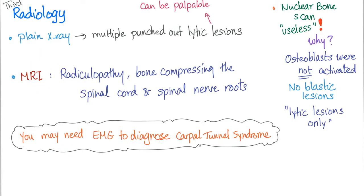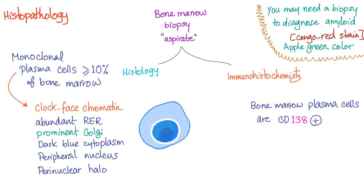EMG may be needed to diagnose carpal tunnel syndrome. For histopathology, we need a bone marrow biopsy — if we have clonal plasma cells greater than 10% of the whole bone marrow, this is multiple myeloma.